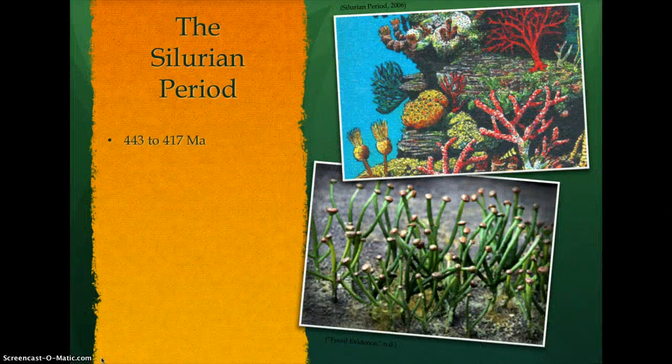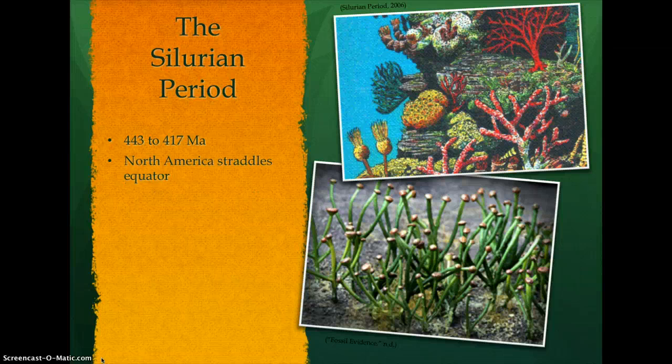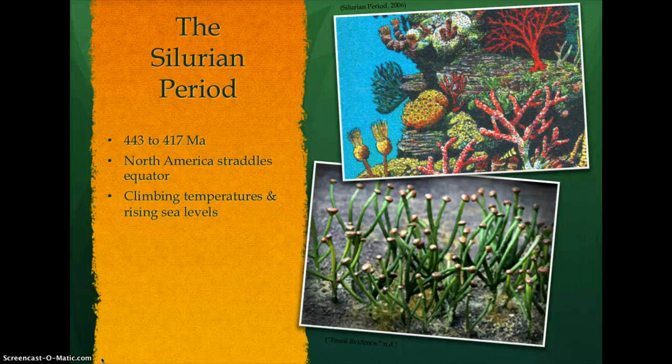During the Silurian period, starting around 443 million years ago, Gondwana land remained near the South Pole while North America and Europe straddled the equator. Climate temperatures increased, giving way to rising sea levels, allowing reef systems to flourish. Evidence of these developed reefs exists in Kentucky today.